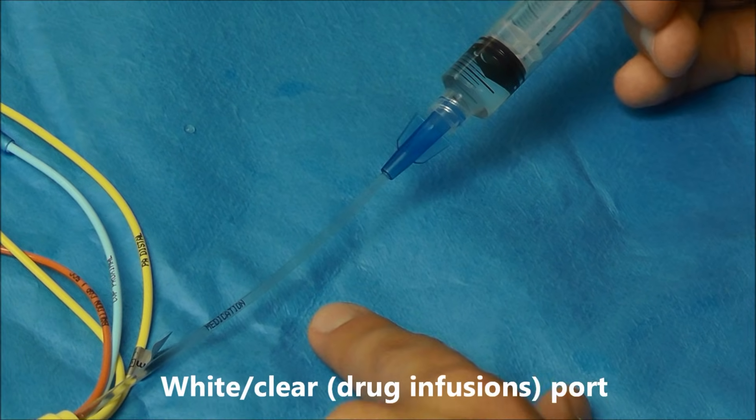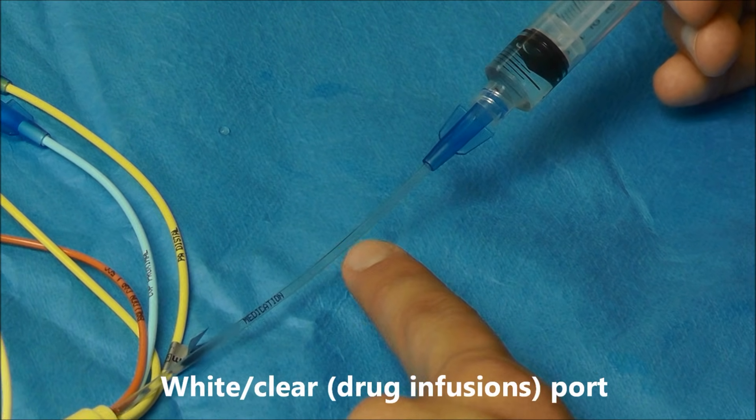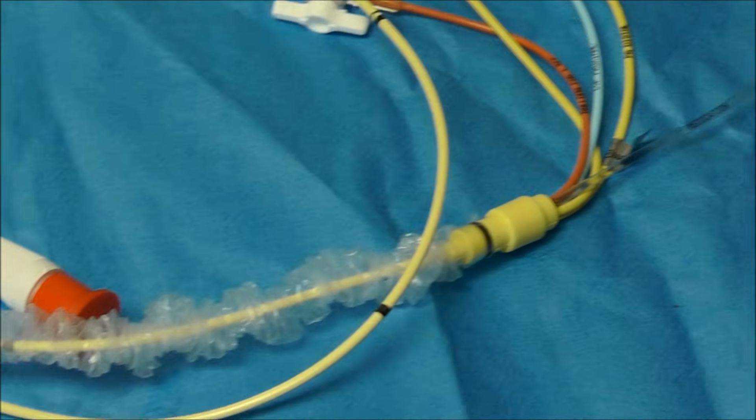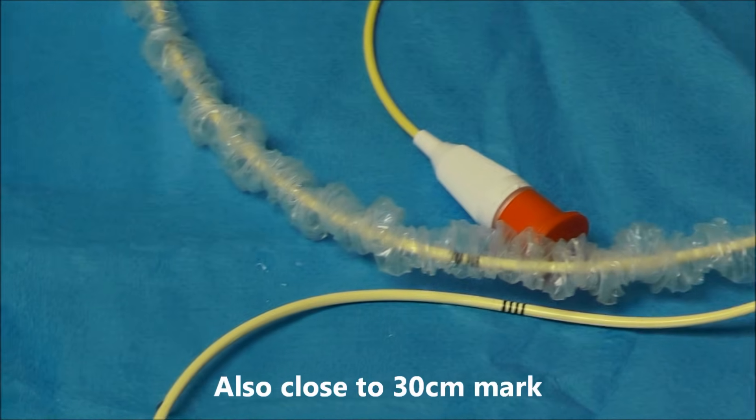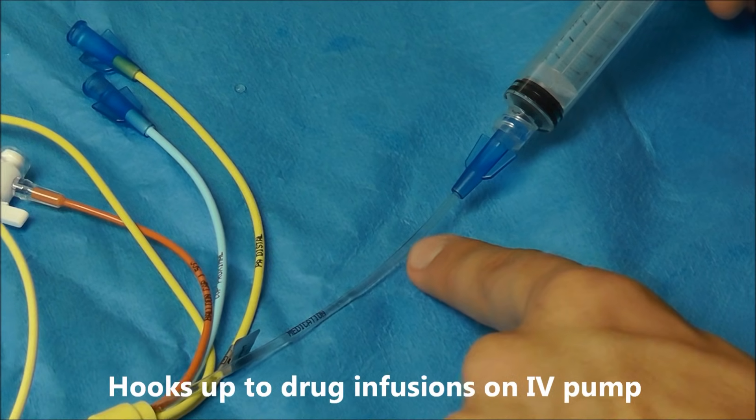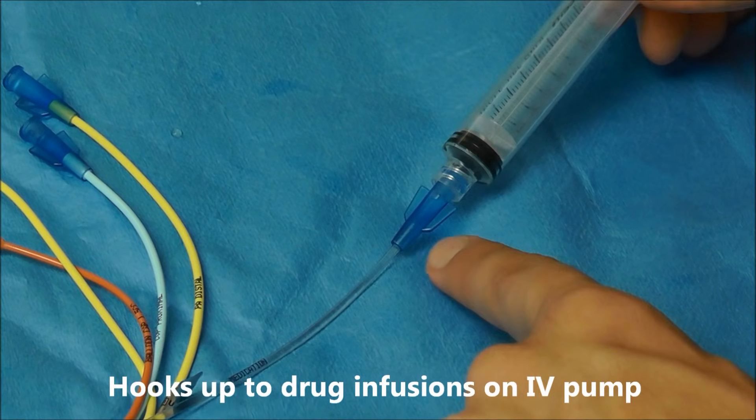The last port that I want to cover here is this clear port. And sometimes it's a white port. And this lumen is also proximal to the distal tip of the catheter. And it is roughly next to the CVP lumen. The purpose of the clear lumen or the white lumen here is for the connection of all of your cardiac infusion drugs.